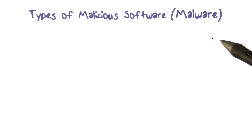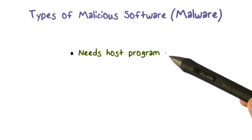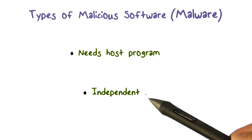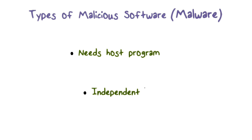There are two major types of malware. The first kind needs a host program, meaning it must be embedded in a host program in order to run and spread. The second type is independent, meaning these are independent programs that can run by themselves. We will study some of them in this lecture and cover the rest in the next lecture.